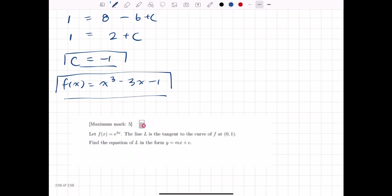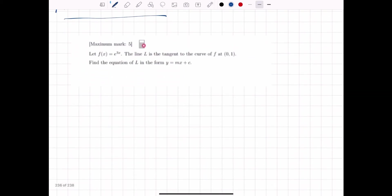So we can say that f of x is equal to x cubed minus 3x minus 1. There we go. Okay, next question. The line L is the tangent. Let's look. So we need to find a line L. We have a tangent and this point where the line is tangent to the graph. Now they want us to find the equation L in form y equals mx plus c.